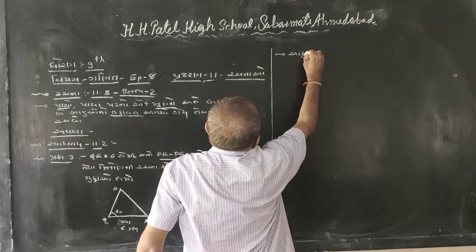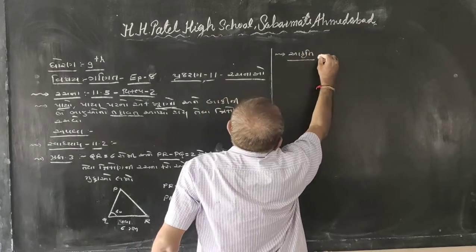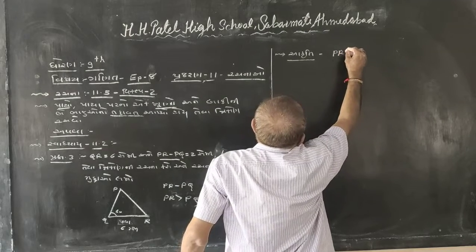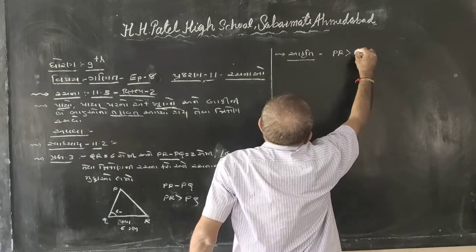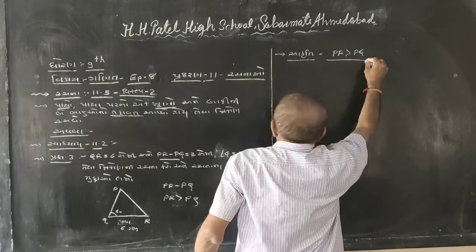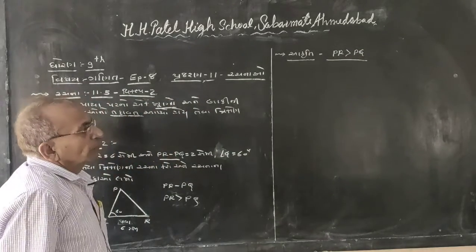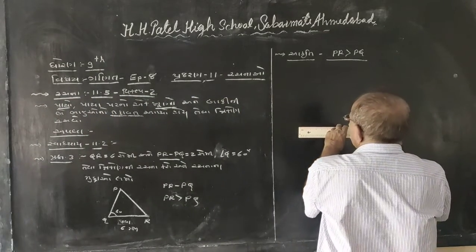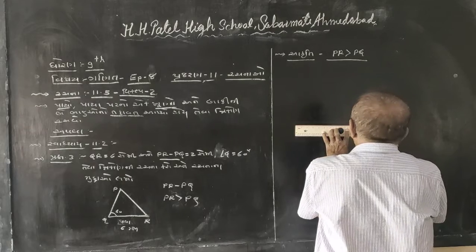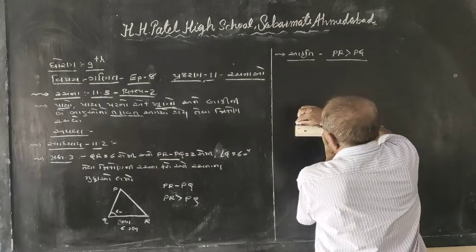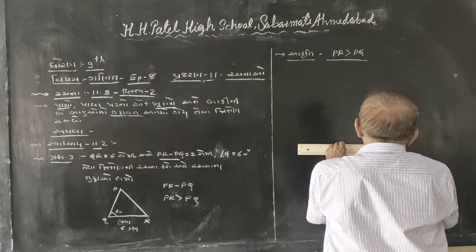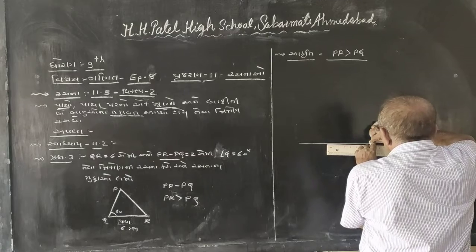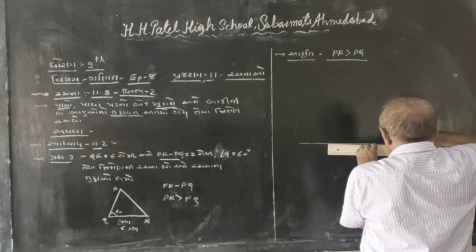PR is greater than PQ. Therefore, using the same principle, the relationship between angles follows accordingly.